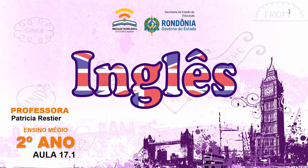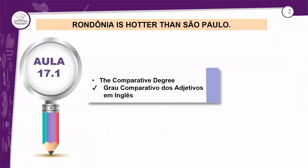17.1 e o título da aula tem tudo a ver com o tema. Nós vamos comparar algo com outra coisa. Então, aqui nesse caso: Rondônia is hotter than São Paulo. O que quer dizer isso? Rondônia é mais quente do que São Paulo. A aula de hoje vai ser sobre o grau comparativo — the comparative degree. E vamos ver o grau comparativo dos adjetivos em inglês. Na próxima aula, na aula 18, vamos ver sobre o superlativo.